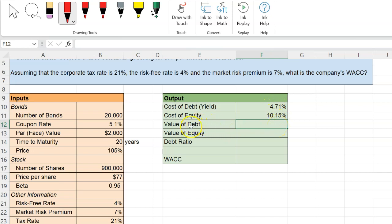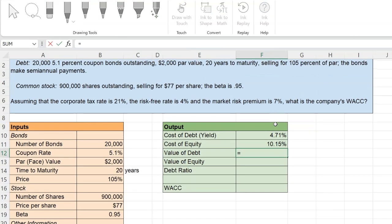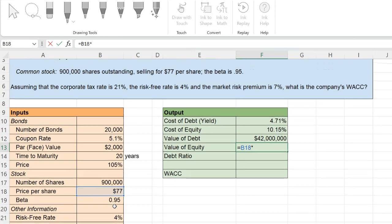Now what remains are the values of debt and equity, because we will need this information to figure out our debt ratio. Value of debt is simply equal to the price at which it is selling, which is 105%, times the par value, which is $2,000. We will then multiply this price by the total number of bonds, which is 20,000. So this gives us the worth of all the bonds that are trading right now. So we get $42 million. We can do the same kind of math to figure out the value of equity. Value of equity is simply price per share times the number of shares outstanding, which are 900,000. And so when we do that, we get $69.3 million.